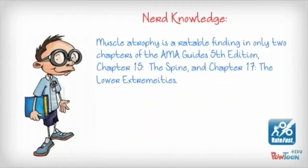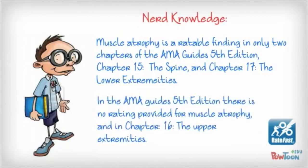This next slide is going to give us some more details specifically on where we can find and learn more about muscle atrophy. Muscle atrophy is rateable only in two chapters of the AMA guides fifth edition. The first chapter is chapter 15, the spine, and the second chapter is chapter 17, the lower extremities. It's important to note that the AMA guides provides no rating for atrophy at all in chapter 16, the upper extremities. So keep that in mind as you're looking and reviewing reports and creating reports — muscle atrophy is not rateable in chapter 16.